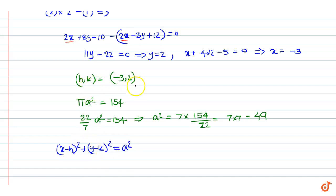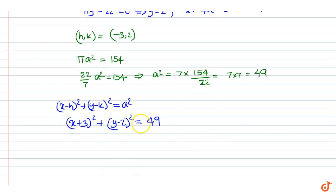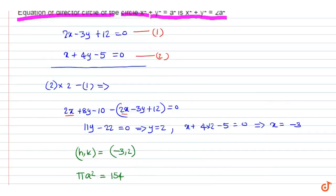Here, (h, k) is equal to (minus 3, 2). So the circle is: x plus 3 whole squared plus y minus 2 whole squared equal to 49. The equation of the director circle is therefore x plus 3 whole squared plus y minus 2 whole squared equal to 49 multiplied by 2, equal to 98. This is the equation of the director circle.